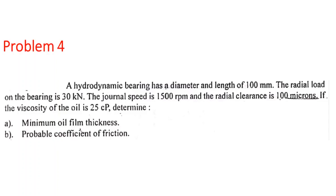Problem 4 on hydrodynamic lubrication: a hydrodynamic bearing has diameter d = 100 mm and length l = 100 mm. The radial load w = 30 kN (convert to Newtons), journal speed = 1500 rpm (convert to rev/s), radial clearance c = 100 microns (convert to mm), and viscosity mu = 25 cP (convert to N·s/mm²). Determine minimum oil film thickness ho and probable coefficient of friction f.